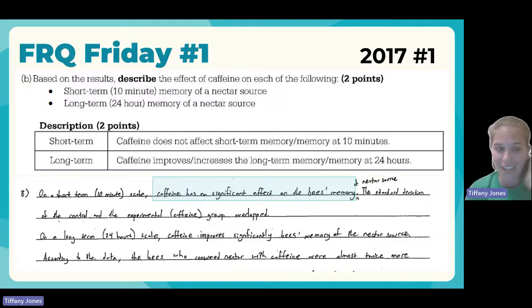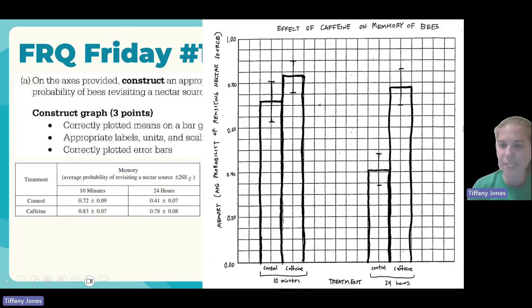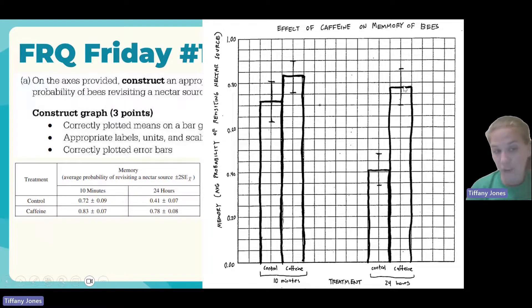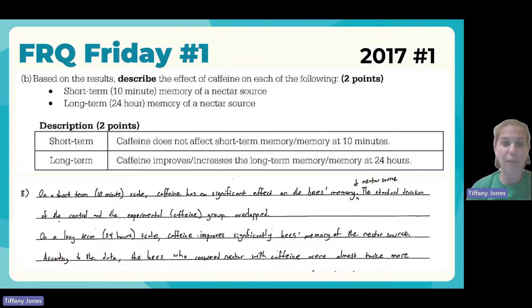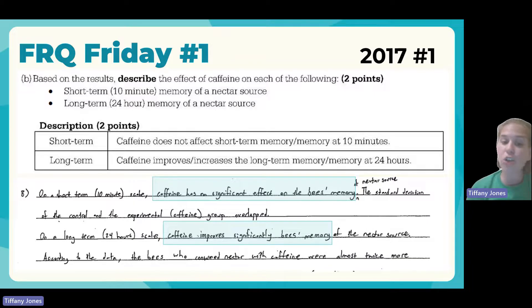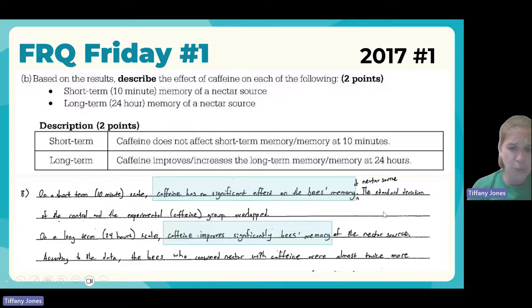For long-term memory, looking at the 24-hour data, the error bars between the control and the caffeine group do not overlap. Non-overlapping error bars show that caffeine does have a statistically significant effect. We don't just say 'it has an effect' — we specify what the effect is: caffeine increases or improves long-term memory. The student response also noted the nectar revisit probability was twice as high and that the error bars do not overlap.